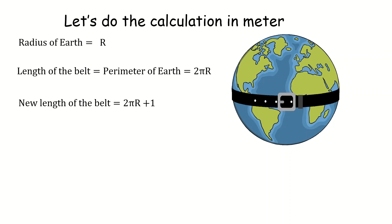When you add one meter to the length of the belt the new length is going to be 2πR plus 1. Now if you want to find the new radius for the belt you divide this new length by 2π and that gives you R plus 1 over 2π.